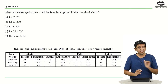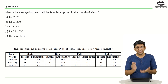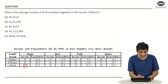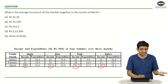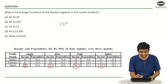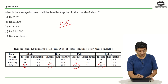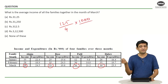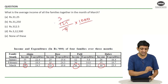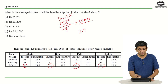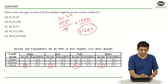In this question, you have to find the average income of all the families together in the month of March. Here you will need to calculate an actual value. The incomes in March are: Ahuja 26, Bose 33, Patil 36, and Dubey 30. Adding: 26 plus 33 is 59, plus 36 is 95, plus 30 is 125. So total income is 125. Dividing by 4 gives 31.25, and since all values are in thousands, the answer is 31,250 rupees — option B.